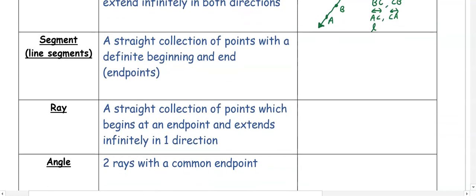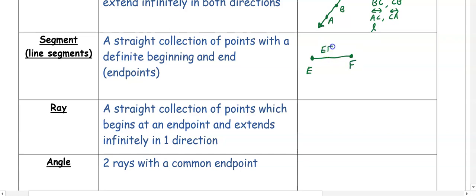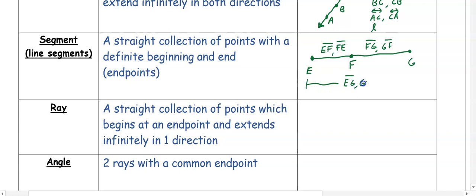A segment is a straight collection of points with a definite beginning and ending, which are endpoints. On our segment, we have the letter E going to the letter F, so we can name this segment EF or FE. We could also extend it to add a point G. This part of the segment would be FG or GF, and the whole segment would be EG or GE.